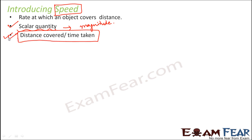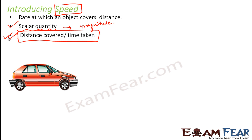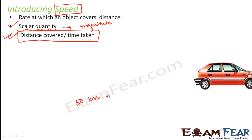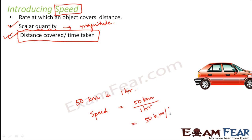Let's take the example of a car that travels 50 kilometers in one hour. The speed of the car is distance traveled — 50 kilometers — divided by time taken — one hour — which gives 50 kilometers per hour. Any object with a higher speed moves faster because it is traveling more distance over a specific period of time. Any object with a lesser value of speed is traveling at a slow speed.